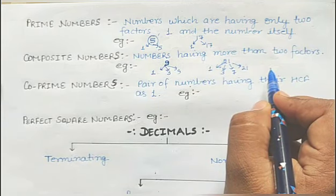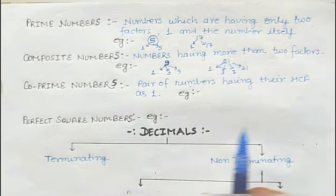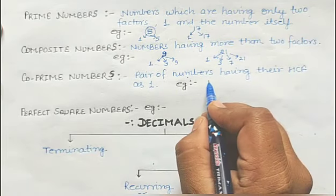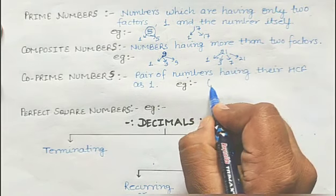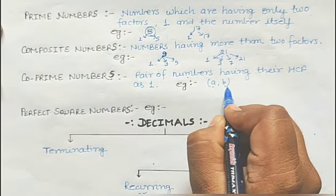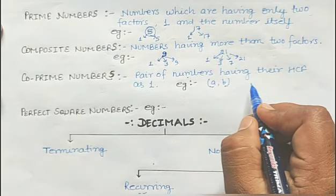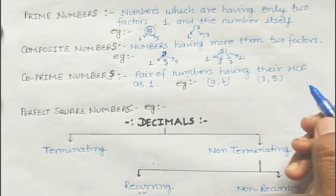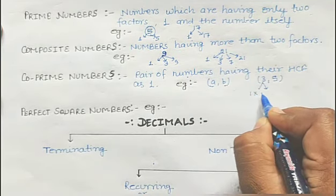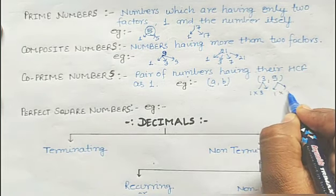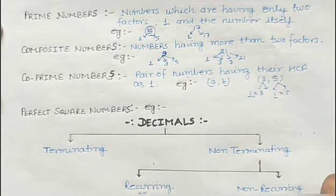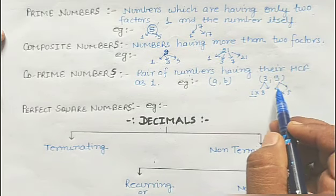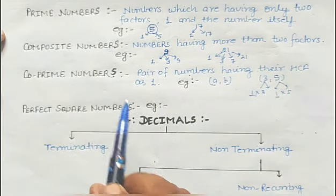The smallest composite number is 4, and the smallest prime number is 2. Now, co-prime numbers: a pair of numbers having their HCF as 1. We denote co-prime numbers as (a, b). For example, (3, 5): 3 has factors 1 and 3, 5 has factors 1 and 5 — the only common factor is 1. So pairs of numbers which are having their HCF as 1 are known as co-prime numbers.